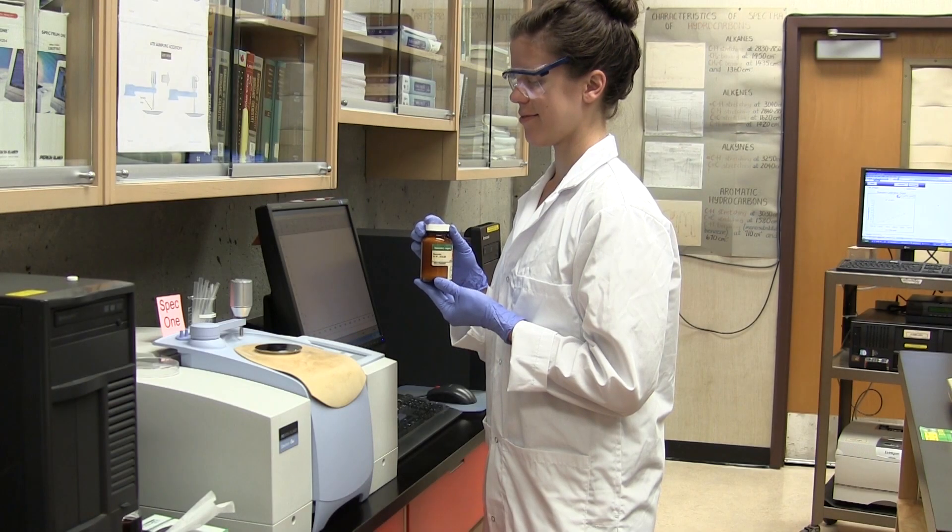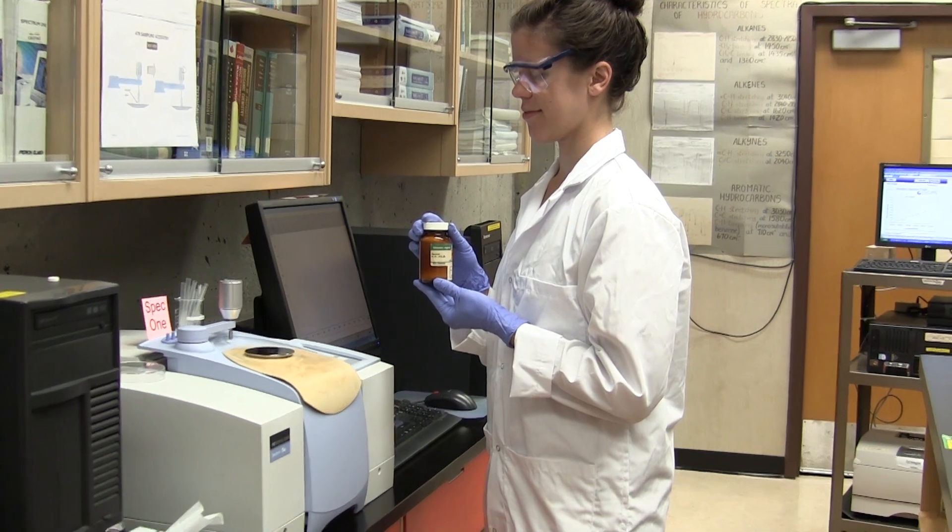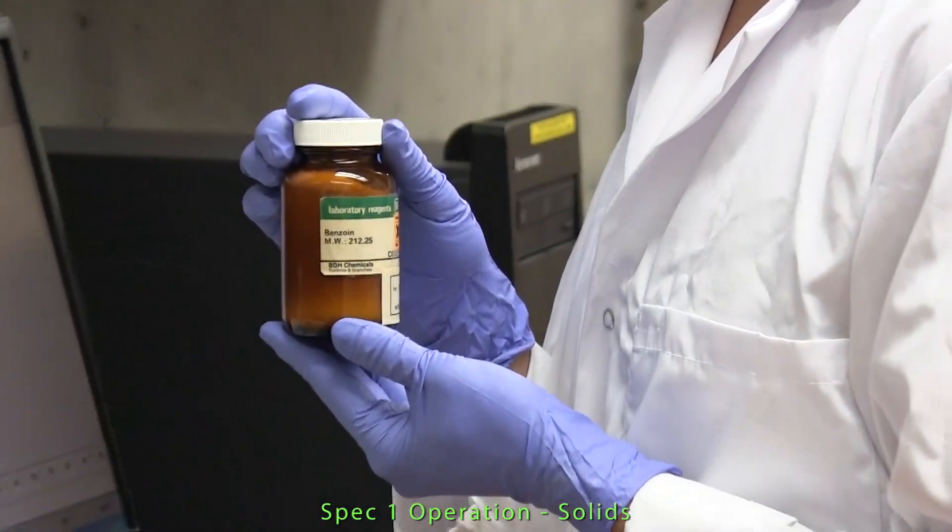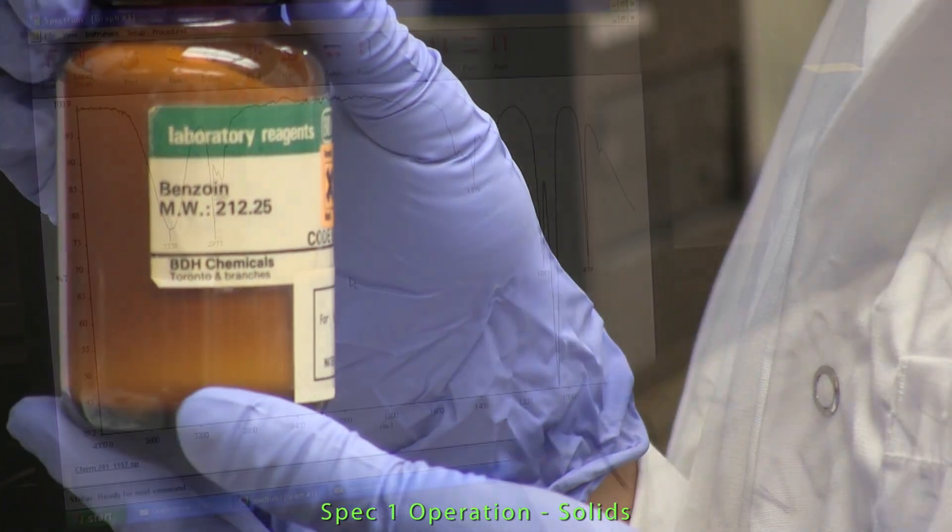So now let's take a closer look at how we prepare both liquids and solids for IR spectrometry. Lauren here is going to first obtain the IR spectrum of a solid, in this case benzoin, using the ATR on SPEC 1.